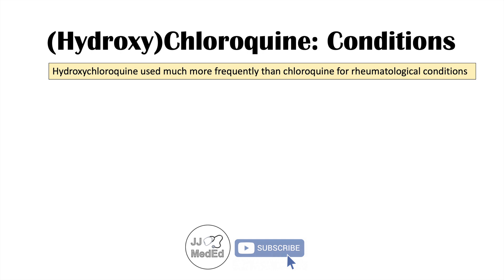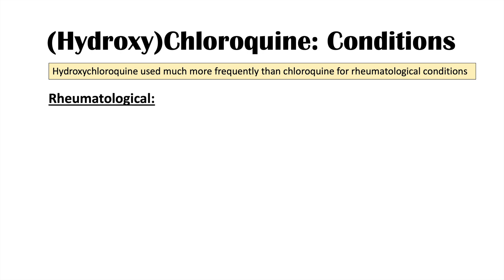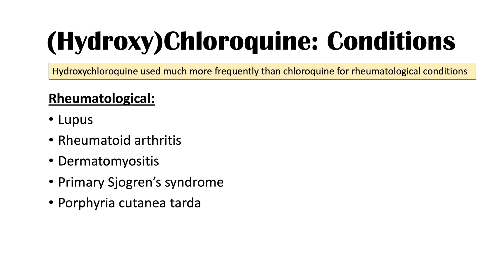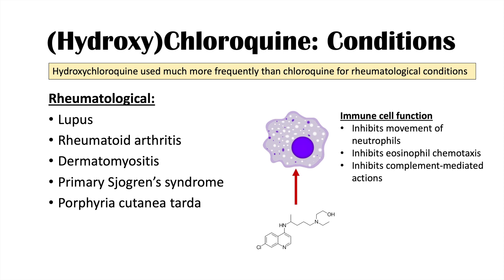Besides protozoal and viral infections, these medications can be used to treat rheumatological conditions as well. Hydroxychloroquine is used much more frequently than chloroquine for rheumatological conditions. The conditions we can treat include lupus, rheumatoid arthritis, dermatomyositis, primary Sjogren's syndrome, and porphyria cutanea tarda. Hydroxychloroquine can alter immune cell function — it inhibits movement of neutrophils, inhibits eosinophil chemotaxis, and inhibits complement-mediated actions, giving it immunomodulatory effects that help treat autoimmune conditions.